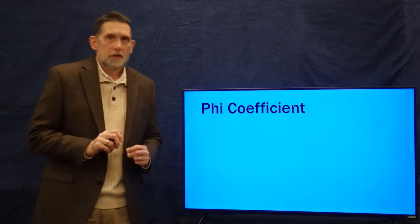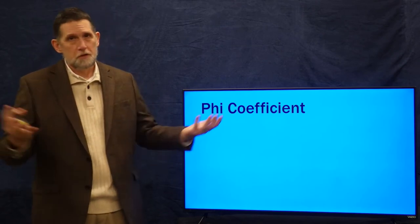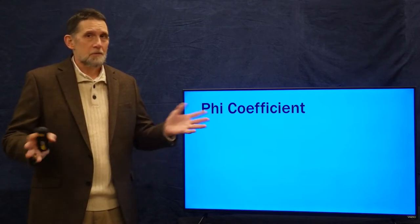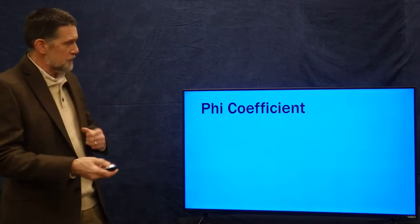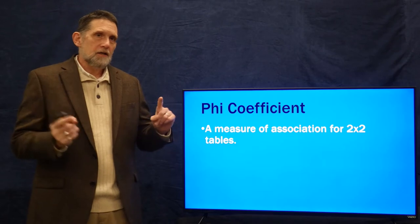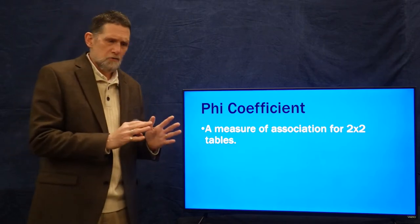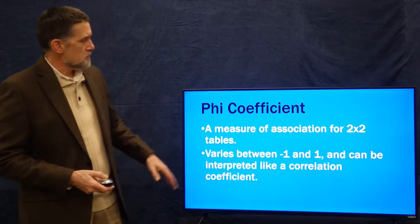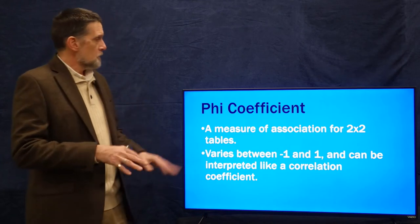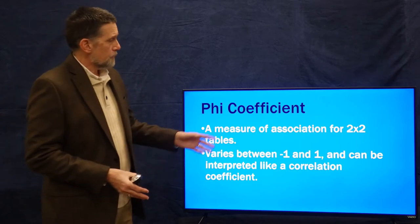Another thing we've heard about before in correlation is called the phi coefficient. I've always heard it referred to as the phi coefficient, but it may just be that my teachers didn't know how to pronounce it because it's spelled phi. The phi coefficient is a measure of association for two by two tables. Lambda allows you to do a measure of association for larger tables, but it goes from zero to one, so it's not necessarily that easily interpreted. The phi coefficient goes from minus one to one and can be understood just like a correlation coefficient, but for a two by two table. So if you want to see if a correlation is negative or positive and you have dichotomous nominal variables in a two by two table, you can use the phi coefficient.